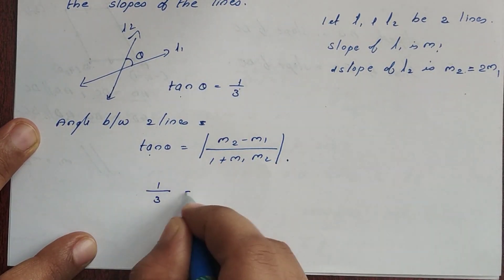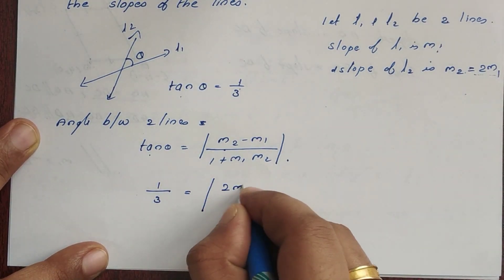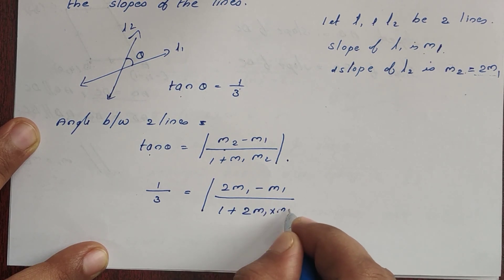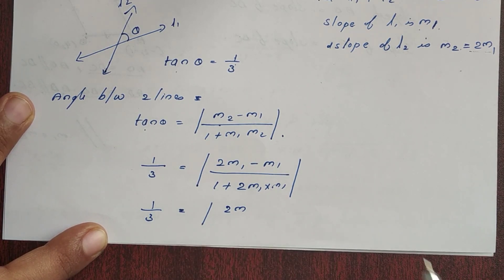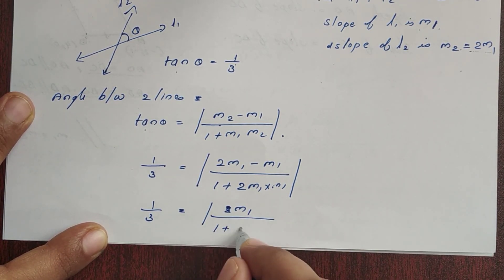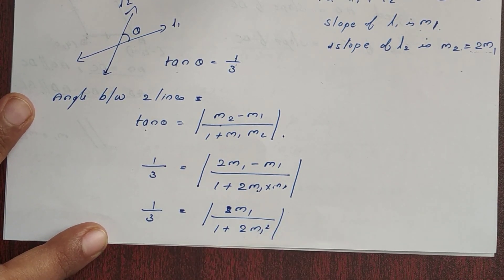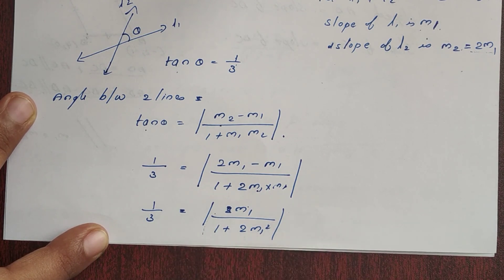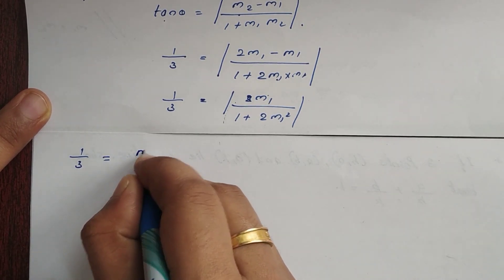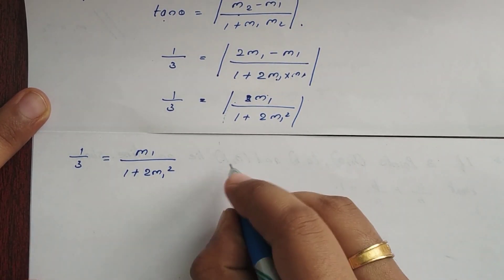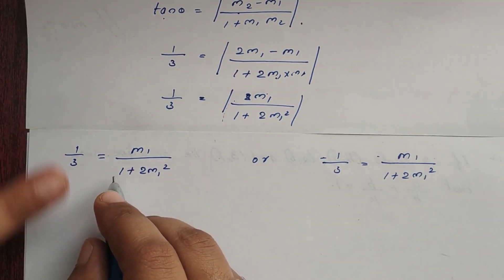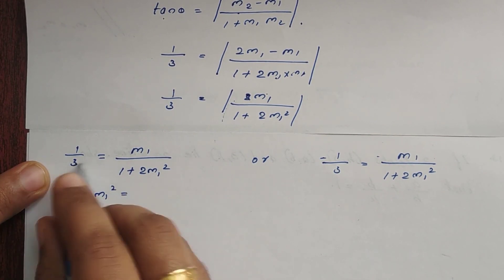Substituting M2 = 2M1: tan theta equals modulus of 2M1 minus M1 divided by 1 plus 2M1 squared, which simplifies to M1 divided by 1 plus 2M1 squared. So 1 by 3 equals M1 divided by 1 plus 2M1 squared. Cross multiplying gives 1 plus 2M1 squared equals 3M1.